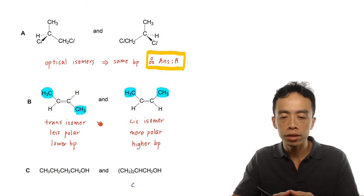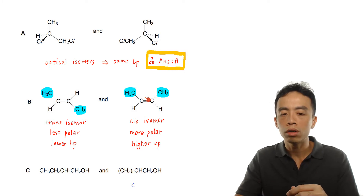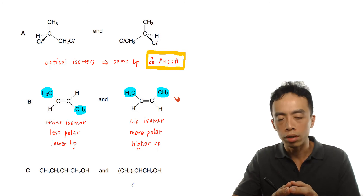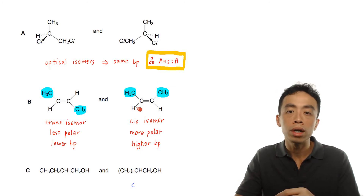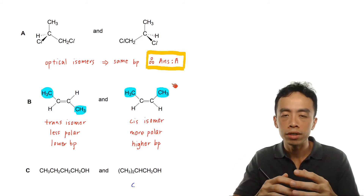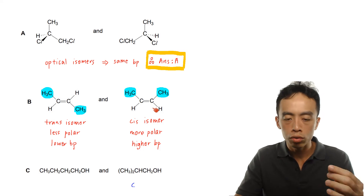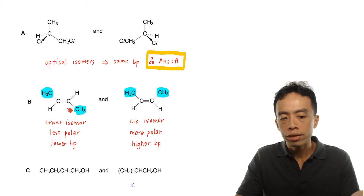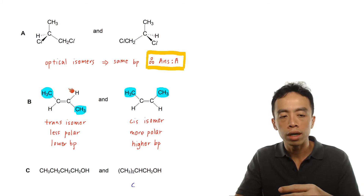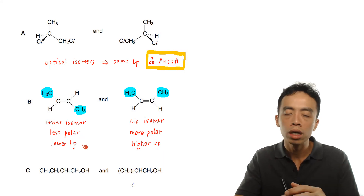To compare boiling points between cis and trans isomers: the cis isomer has bulky groups on the same side, making it less symmetrical and more lopsided. The electron clouds are unevenly distributed, so the cis isomer is slightly more polar with a degree of permanent dipole–permanent dipole attraction, giving it a slightly higher boiling point. The trans isomer, with groups on opposite sides, is more symmetrical, less polar, lacks significant permanent dipole interaction, and therefore has a slightly lower boiling point.